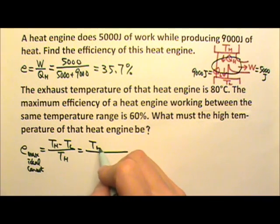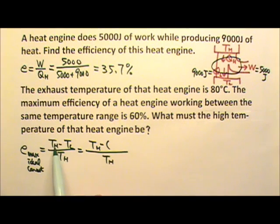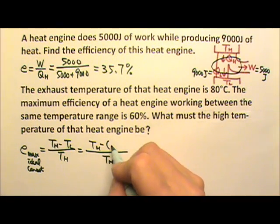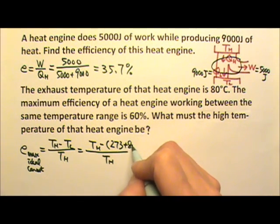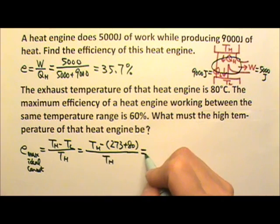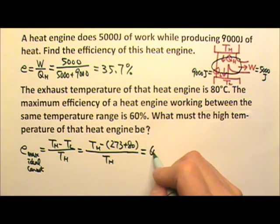We do not know the high temperature, but we do know the low temperature. And we need the temperatures to be in Kelvins. So 80 degrees Celsius has to be 273 plus 80. And this efficiency equals 60%.